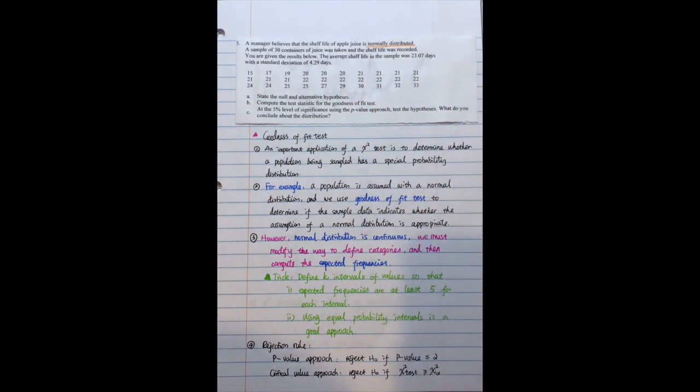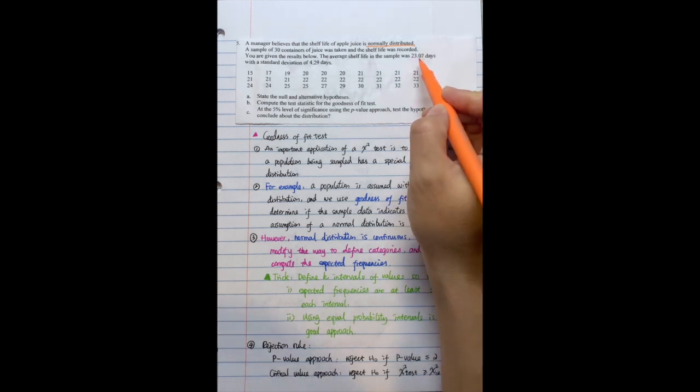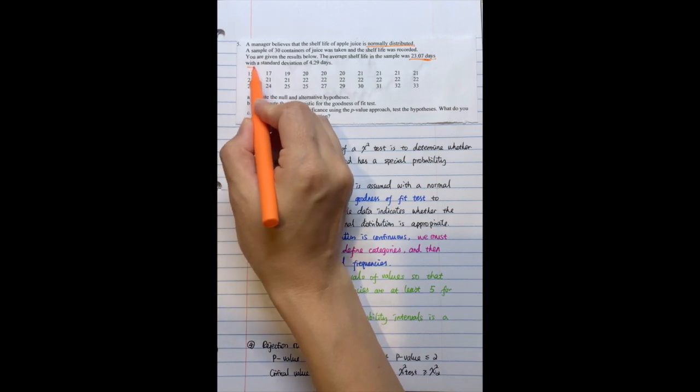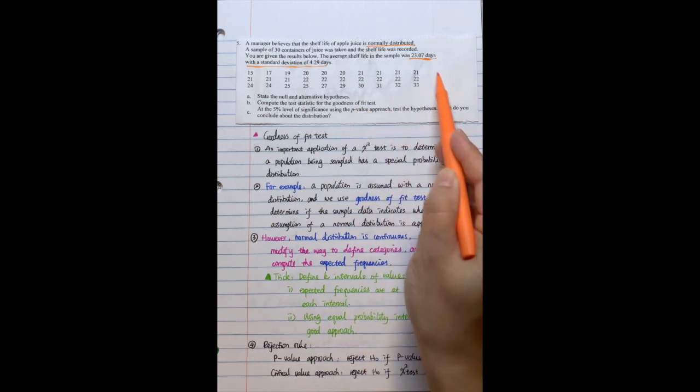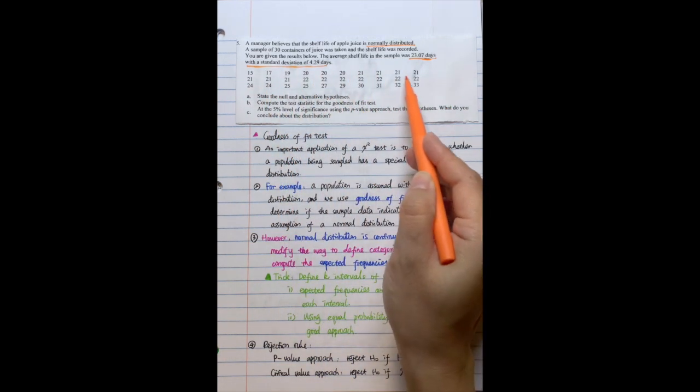A sample of 30 containers of juice was taken and the shelf life was recorded. You are given the results below. The average shelf life in the sample was 23.07 days with a standard deviation of 4.29 days. We have those 30 samples showing the different shelf life.